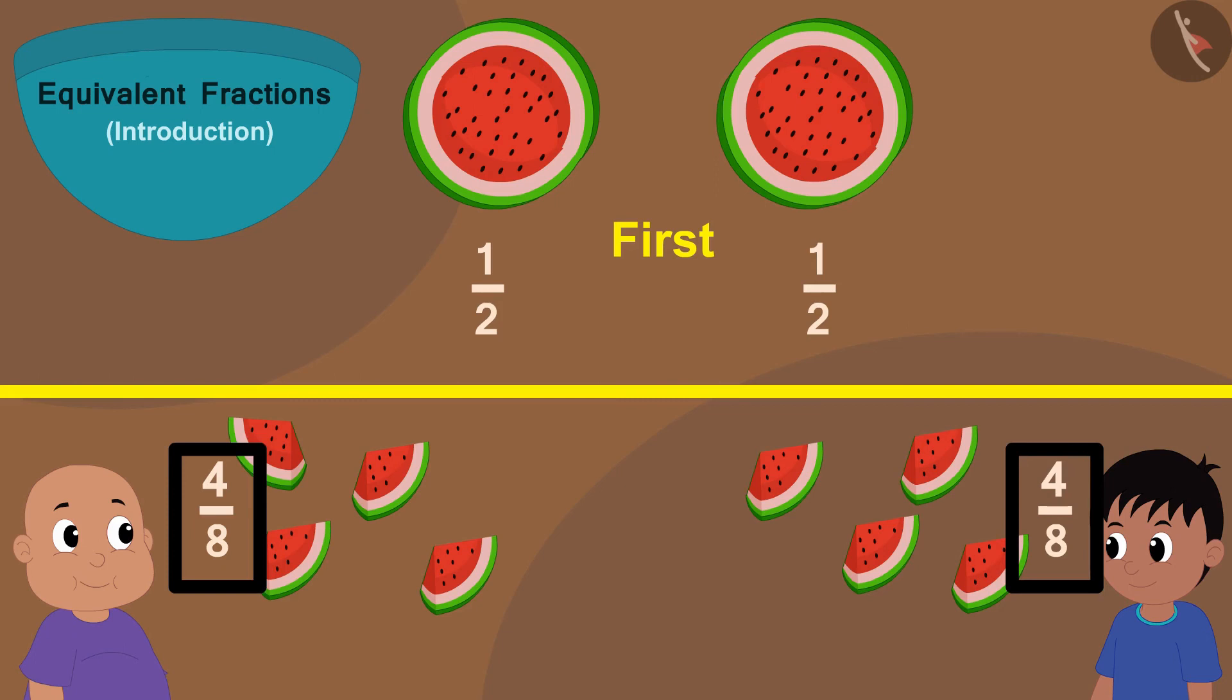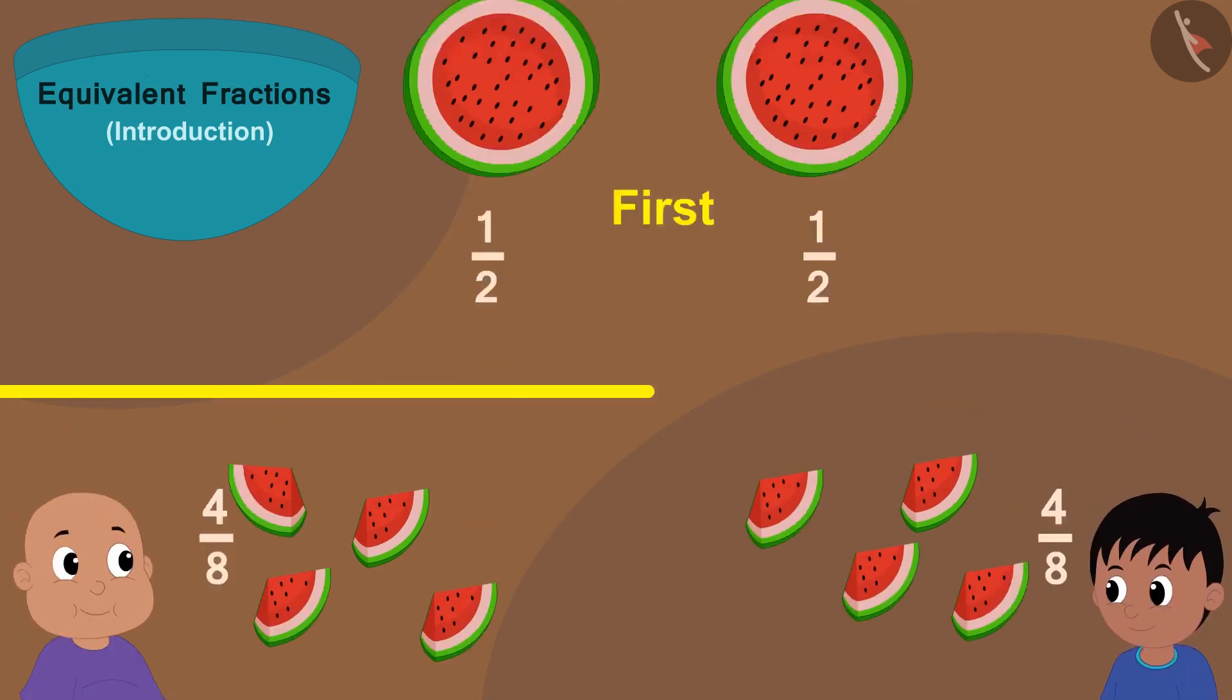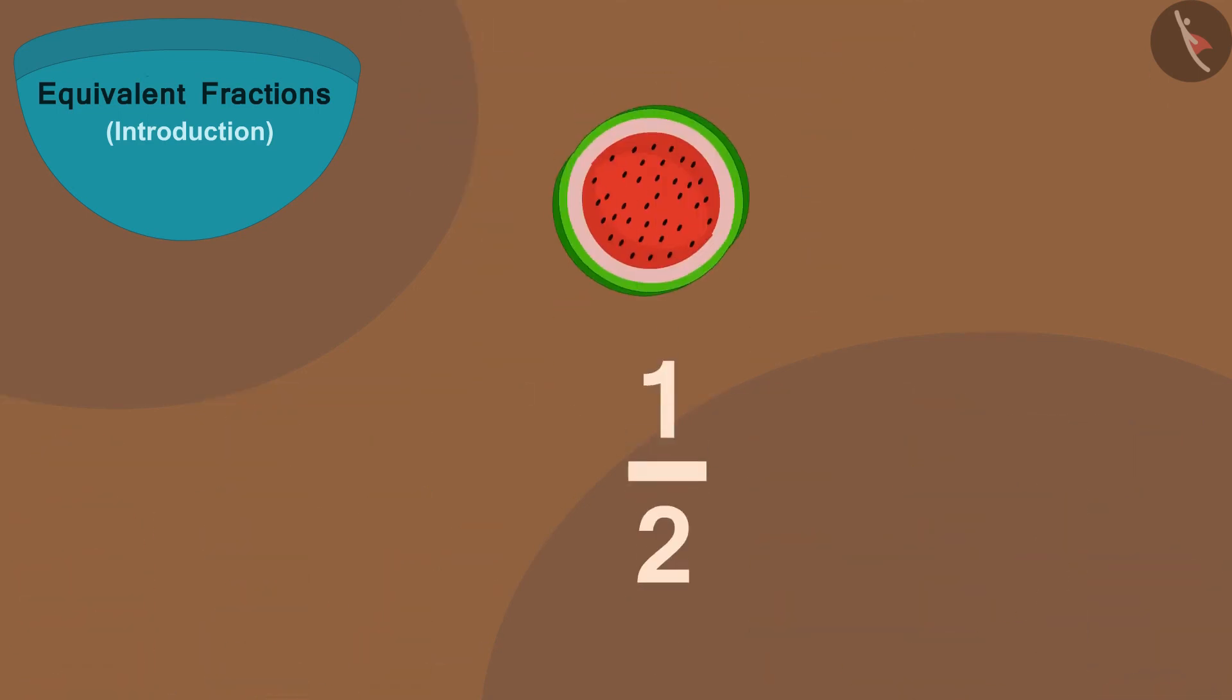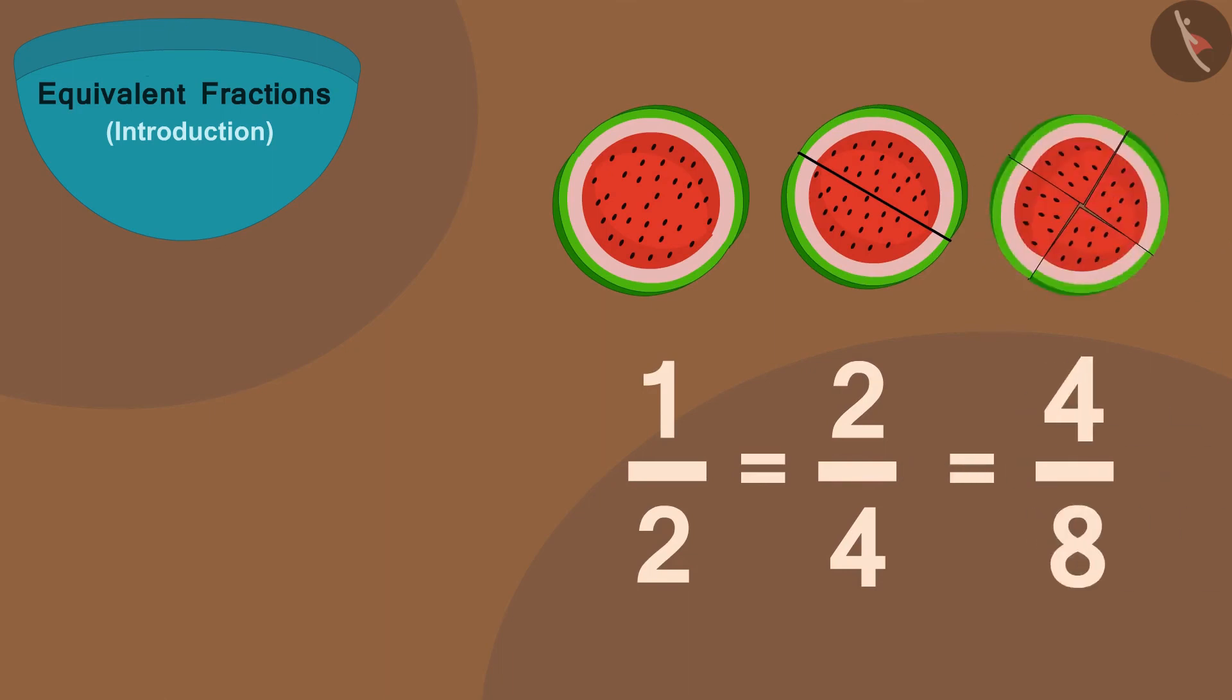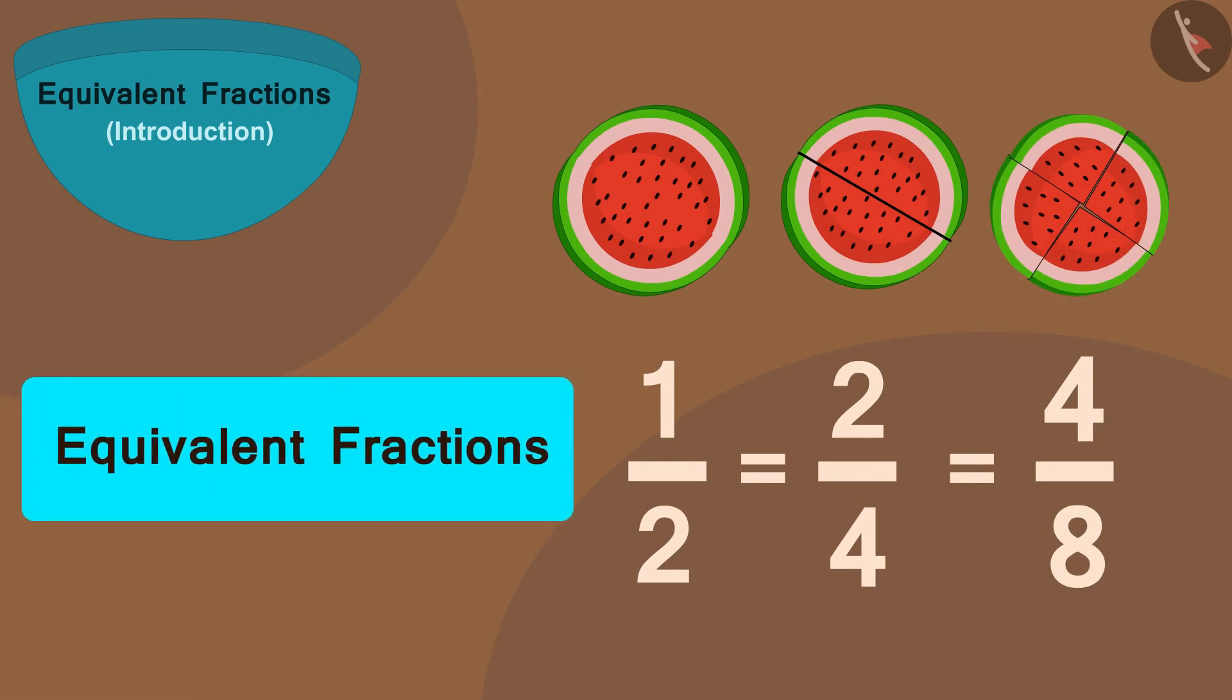If you look closely, you will find that they are still getting half of the watermelon. So, we can write the fraction one by two is equal to the fraction two by four is equal to the fraction four by eight. All of these are equivalent fractions.